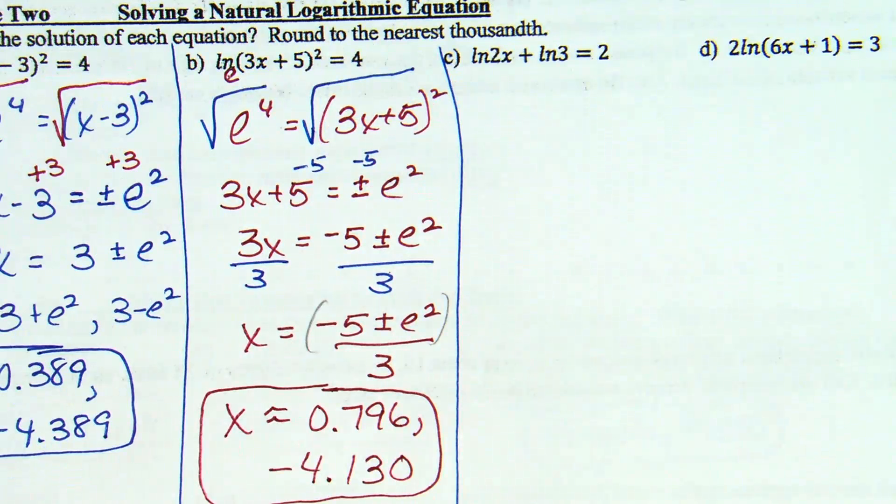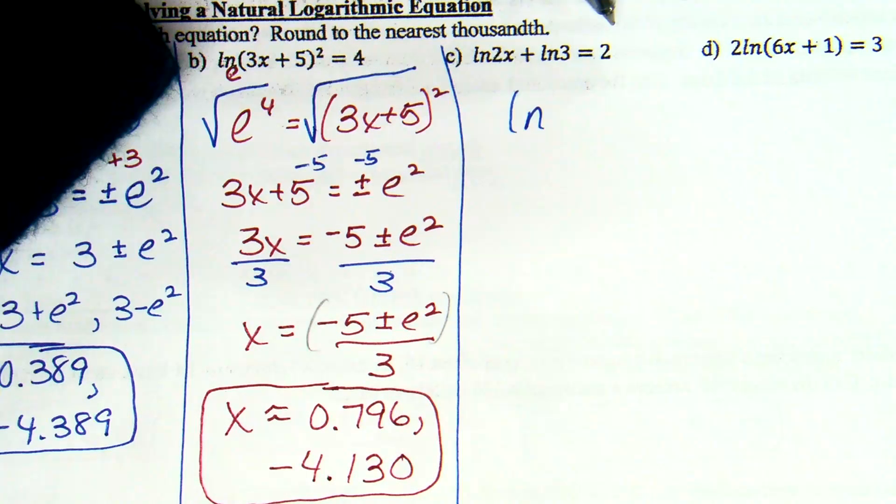So, what is natural log of 2x plus natural log of 3? 2x times 3, which is 6x. So, natural log of 6x equals 2. And now, I'm ready for left, right, and middle. E to the second. So, base e. E to the second equals 6x.